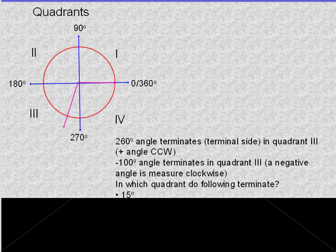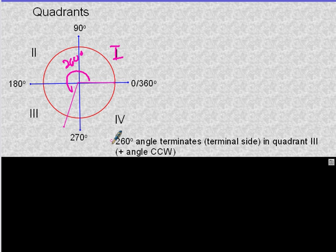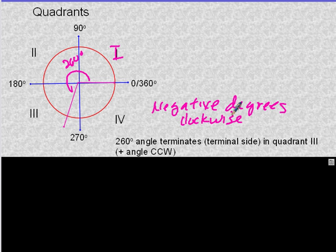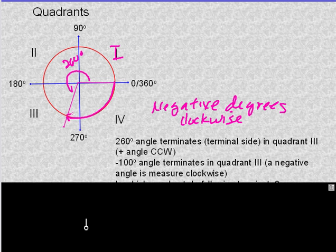So quadrants — we know what the quadrants are: 1, 2, 3, and 4 — and they also go in a counter-clockwise method. A 260-degree angle terminates in quadrant 3. By knowing the measure of the angle, you can figure out which quadrant it's in. This is counter-clockwise — positive 260 degrees. We can also have negative degrees, meaning you go clockwise. A negative 100 means you start at 360 and go 100 degrees clockwise, which also gives 260 degrees. So these represent the same angle.